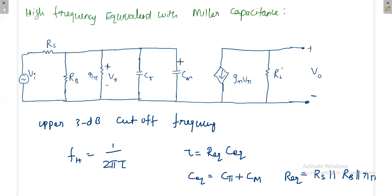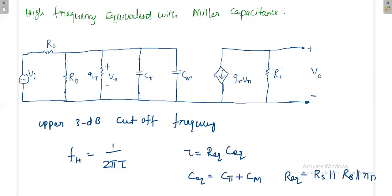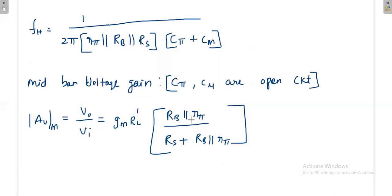However, the entire input voltage is not applied to the base of the transistor because some voltage drops across Rs. The effective input voltage applied to the transistor is found using the voltage divider rule: the factor is (Rb ∥ Rpi) / (Rs + Rb ∥ Rpi). So the full mid-band voltage gain is gm·RL' multiplied by (Rb ∥ Rpi)/(Rs + Rb ∥ Rpi). At mid-frequency, Cpi and Cmu are open circuits.